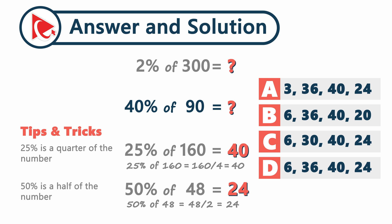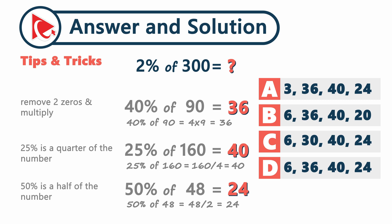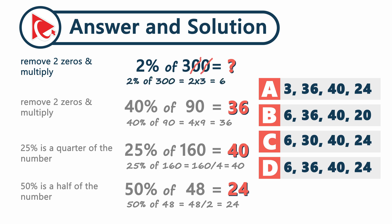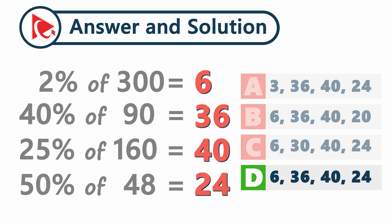For 40% of 90, drop the zeros: 4 multiplied by 9 equals 36. For 2% of 300, drop two zeros from 300: 2 multiplied by 3 equals 6. Recap: 2% of 300 is 6, 40% of 90 is 36, 25% of 160 is 40, and 50% of 48 is 24. The correct answer is choice D — 6, 36, 40, and 24.